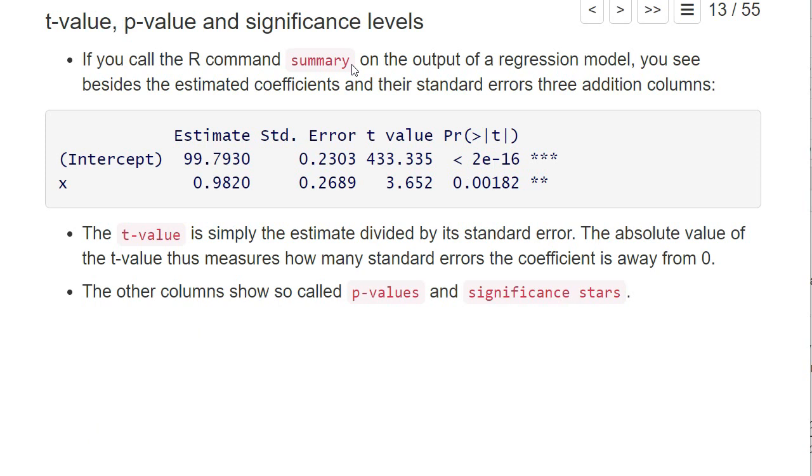If you call the R command summary on the output of a regression model, you see besides the estimated coefficients and their standard errors three additional columns. The t-value is simply the estimate divided by its standard error. The absolute value of the t-value measures how many standard errors your estimate is away from zero. So here we have an estimate of 99, a standard error of 0.23, which means we are roughly 433 standard errors away from zero.